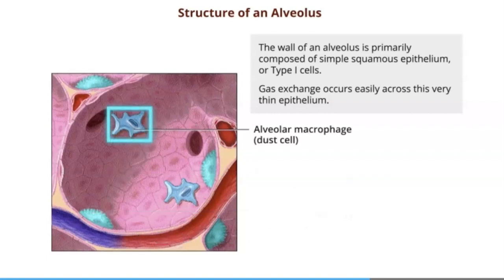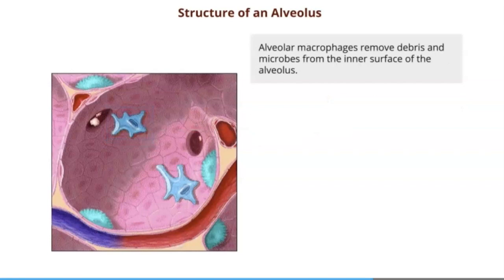The alveolar macrophages are just general phagocytes. They live out their life in the lungs and they phagocytize any dust or debris that enters into that area.